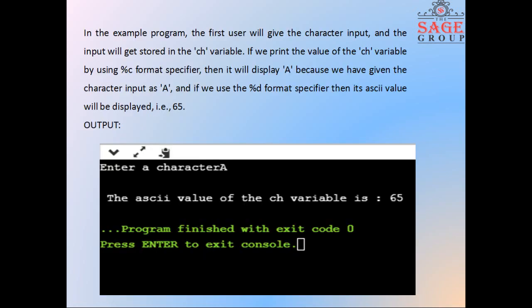In the above example, the first user will give the character input, and the input will get stored in the ch variable. If we print the value of the ch variable by using %c format specifier, then it will display 'A' because we have given the character input as 'A'.